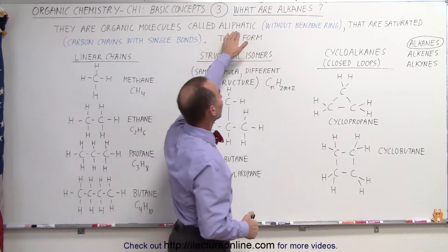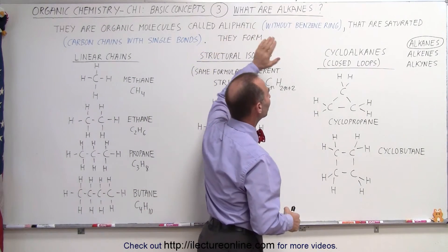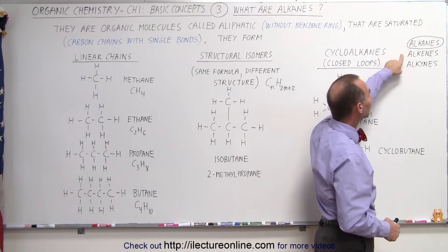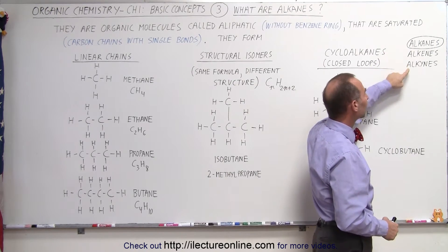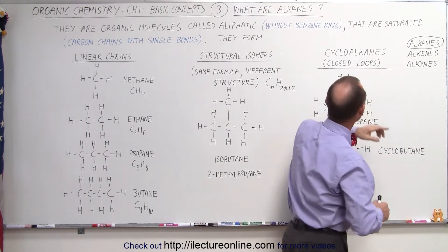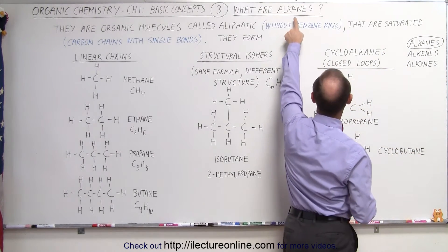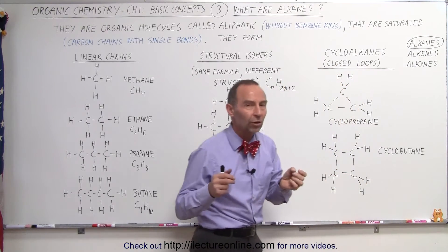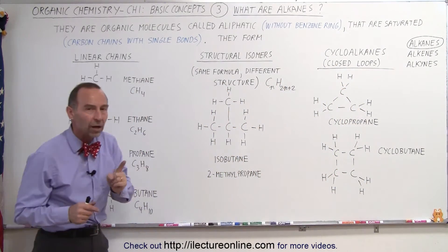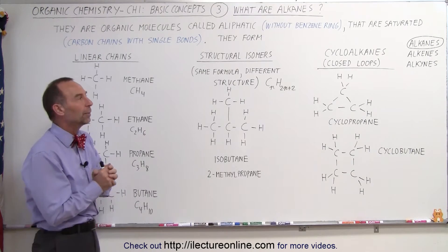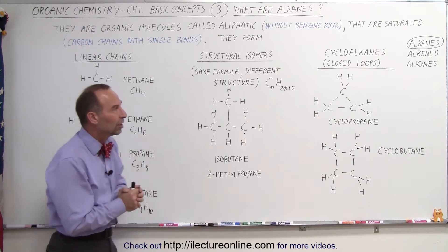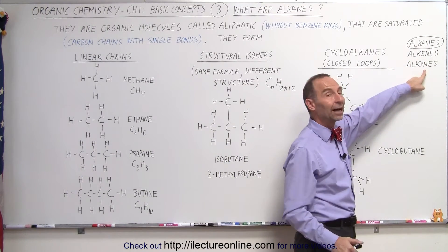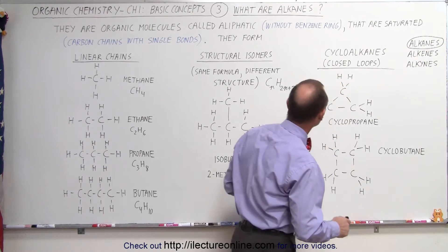Within the aliphatics, we have three different subgroups: the alkanes, the alkenes, and the alkynes. We're going to be talking about the alkanes — those are compounds that only have single bonds between the carbon atoms. The alkenes have at least a double bond, and the alkynes have at least a triple bond.